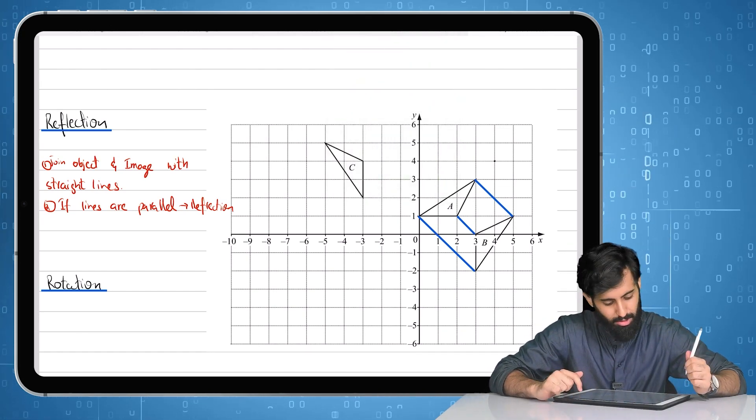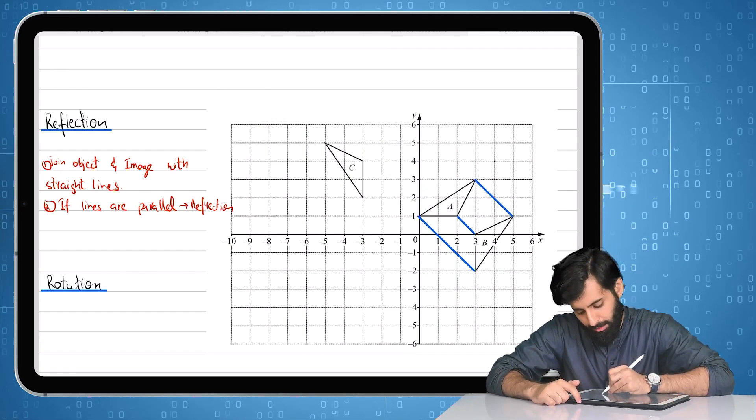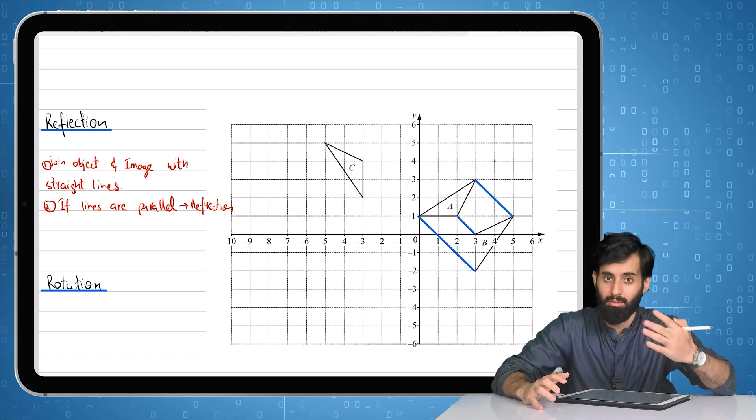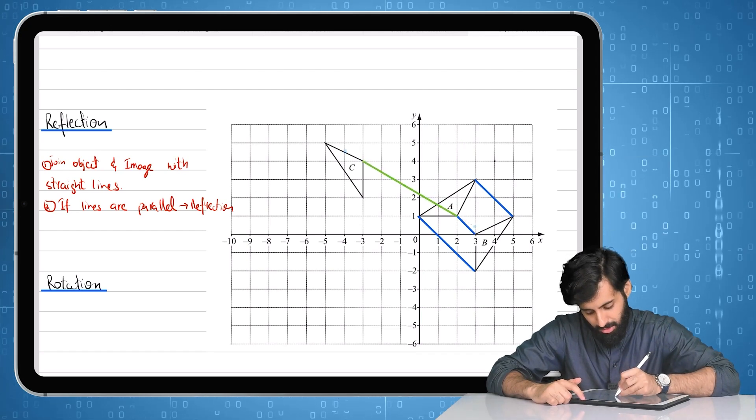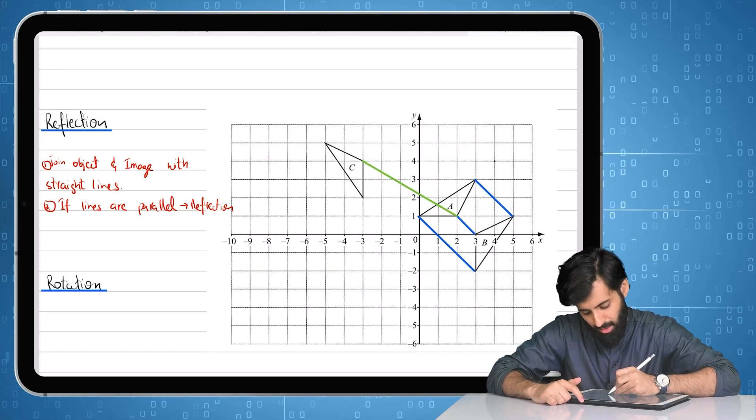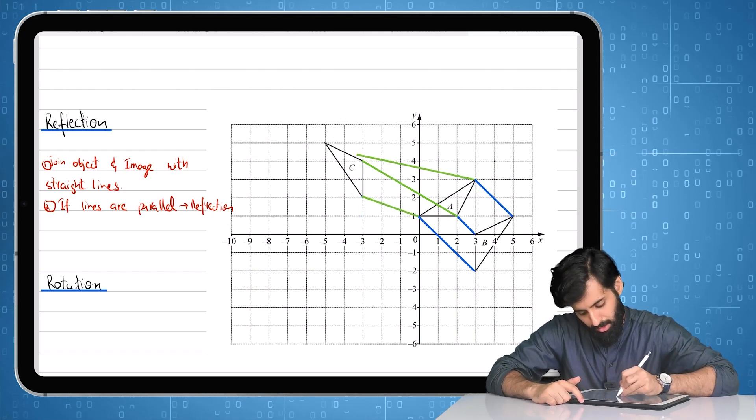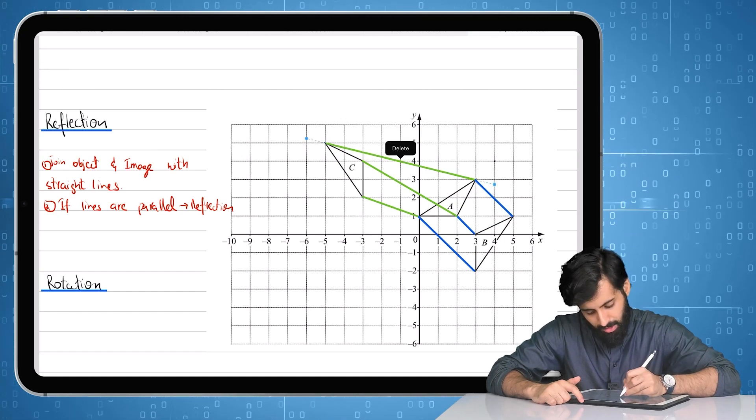So I'm gonna distinguish this. I'm gonna do this with a different color so that you guys can distinguish. So what I'm gonna do now is I'm gonna join every single point on the object with the image as we did earlier. But this time remember that the image is C. So this is the image of this, and this is the image of this point, and this is the image of this point.